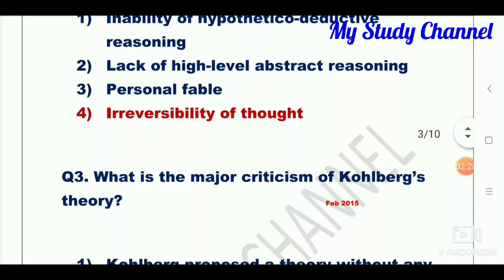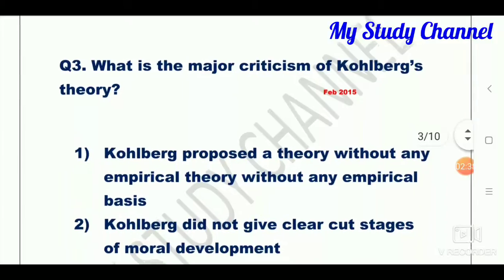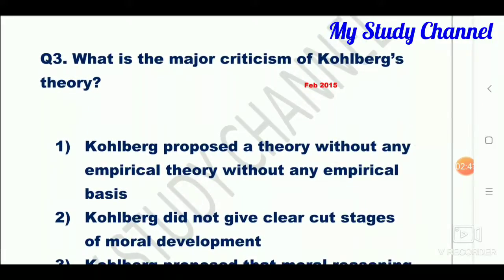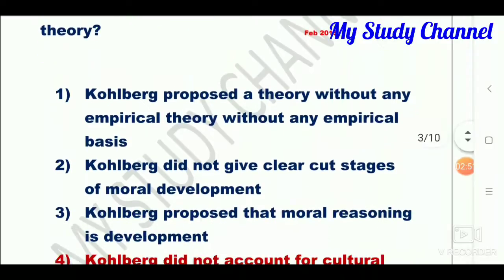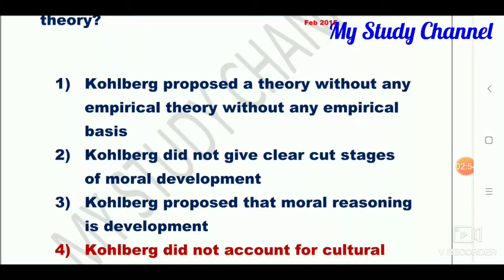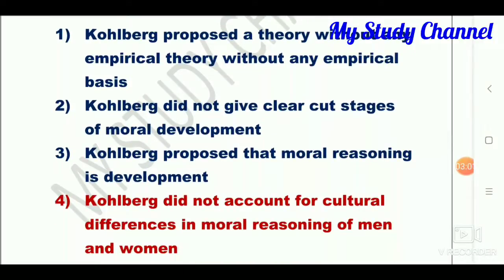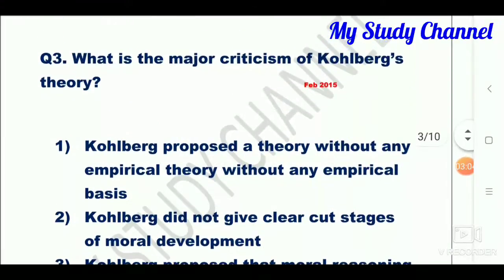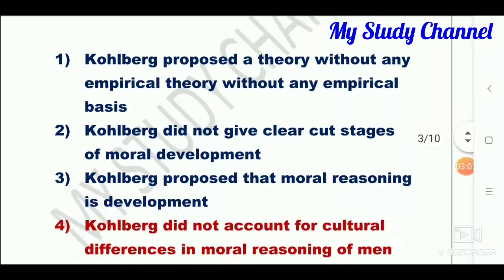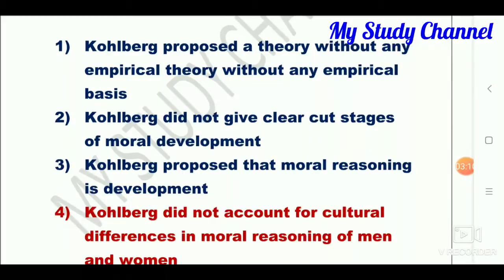Question number four: what is the major criticism of Kohlberg's theory? This is also a most important question. Option one is Kohlberg proposed a theory without any empirical basis; second is Kohlberg did not give clear-cut stages of moral development; third is Kohlberg proposed that moral reasoning is development; fourth is Kohlberg did not account for cultural differences in moral reasoning of men and women. The right answer is option four — Kohlberg did not account for cultural differences in moral reasoning of men and women.